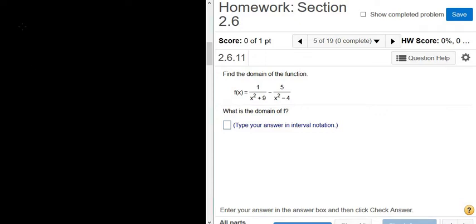Find the domain of the function. So f(x) is equal to 1 over x squared plus 9 minus 5 over x squared minus 4.